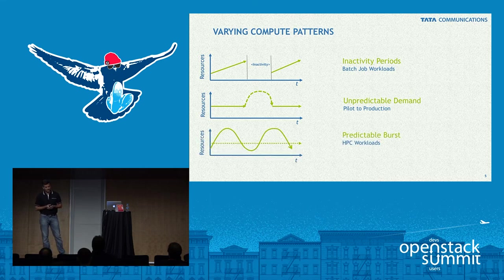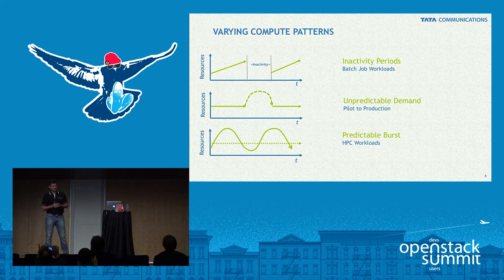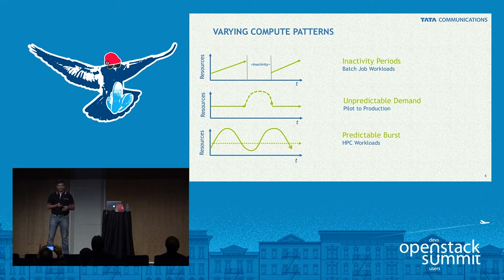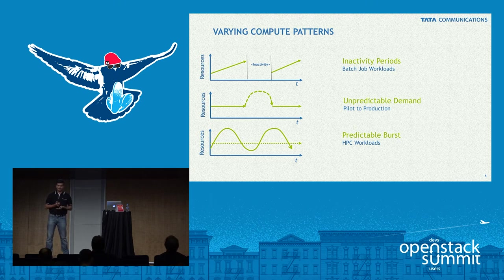There's also predictable burst — workloads with a predictable pattern like HPC, where we know when the peaks and troughs are. In this case, resource allocation becomes challenging because of how flavors and quotas have to be managed in OpenStack.